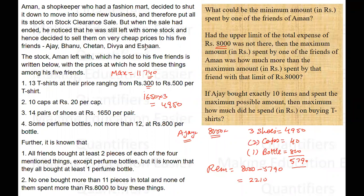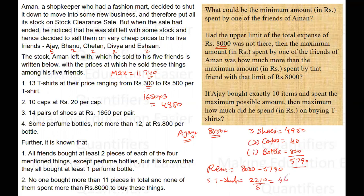Now let's see how many T-shirts he can buy. The other four friends — Chetan, Bhanu, Divya — need at least two T-shirts each, so there are 13 T-shirts remaining, and he can buy five T-shirts. With five T-shirts, the total items are 5 plus 3 plus 2 plus 1 equals 11, which is within the limit. The cost of each T-shirt comes out to be 442 rupees, which lies between 300 and 500 rupees — so this is possible. This confirms it is possible for a person to spend 8000 rupees.